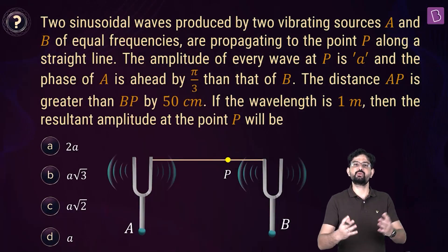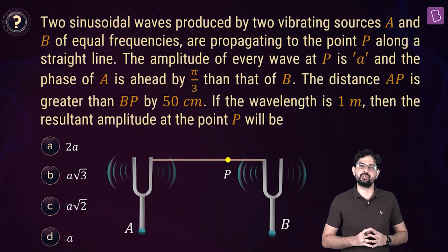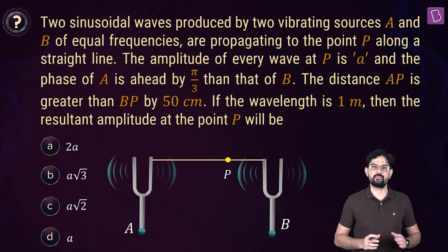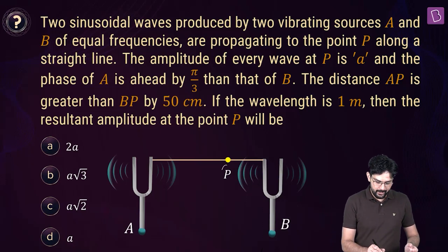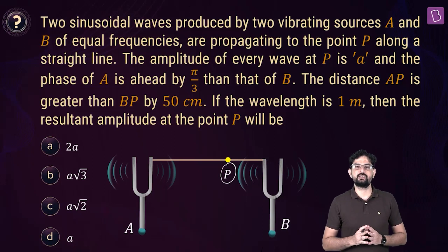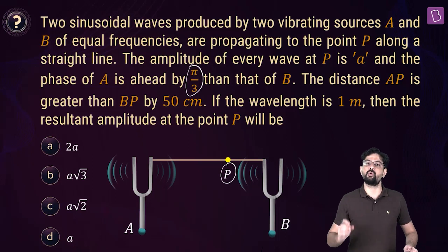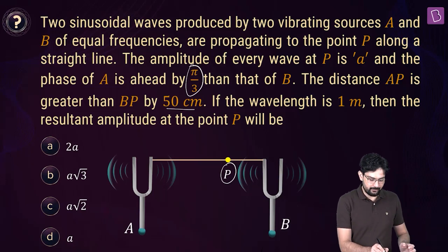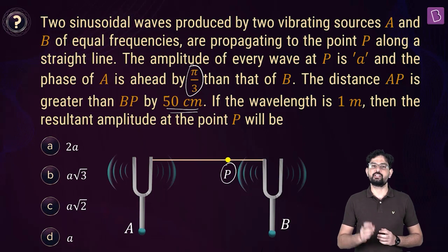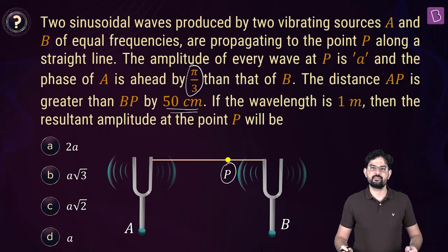Now two sources A and B are producing two waves with equal frequency and equal amplitude A. When the waves produced by these two sources reach point P, the wave produced by source A is ahead of the wave produced by source B by pi by 3 at this location. Given that AP minus BP is 50 centimeter and the wavelength is 1 meter, find the resultant amplitude at point P.